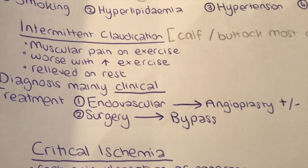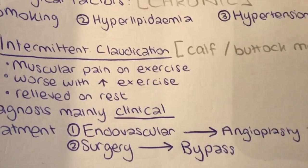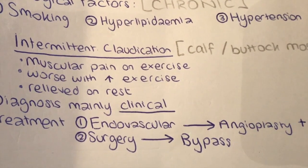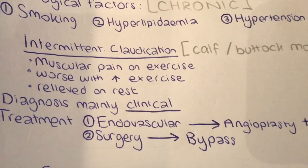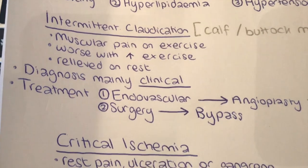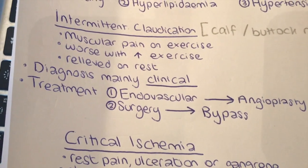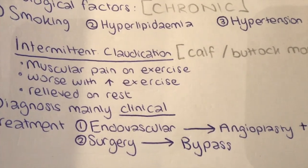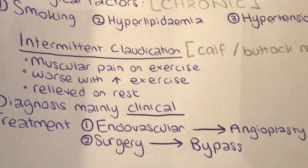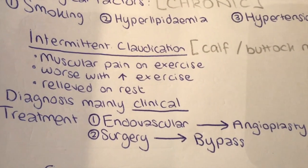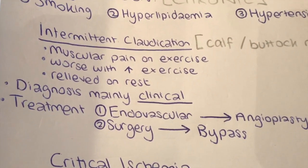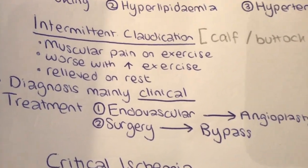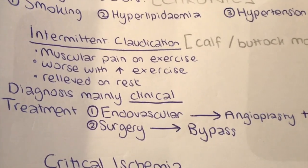The second option — surgery — is not ideal, but in cases where patients are getting claudication by walking short distances and this is causing severe impact on their lifestyle, a bypass can be done depending on where the disease is. An example would be a femoral popliteal bypass.